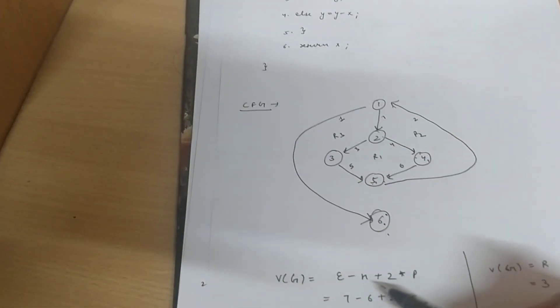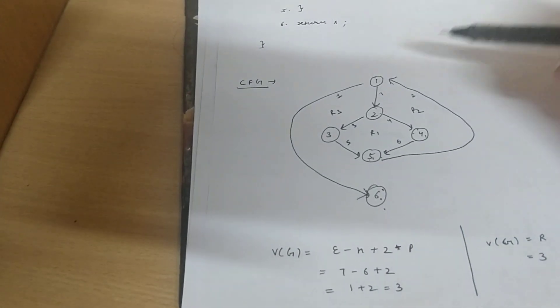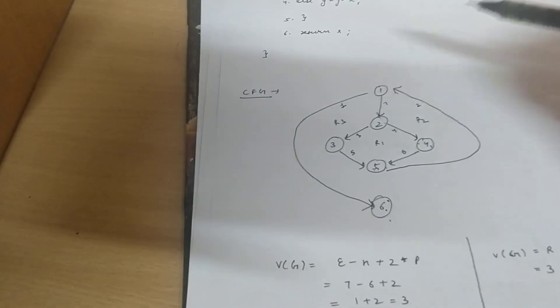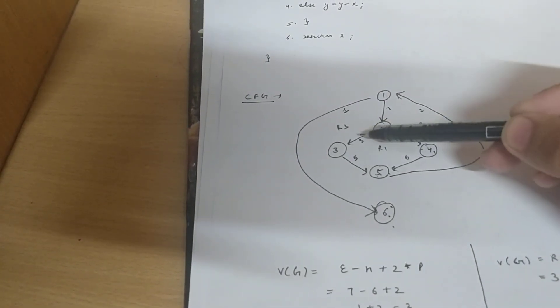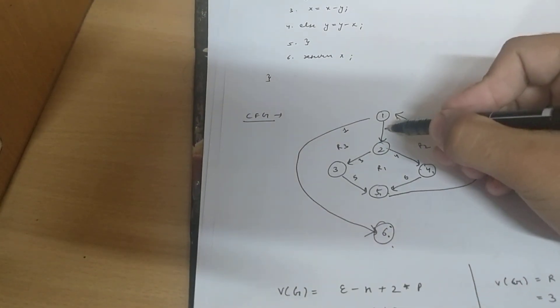From this formula: e minus n plus 2 star p. So we can calculate the number of edges as 1, 2, 3, 4, 5, 6 and 7. So there are 7 edges.